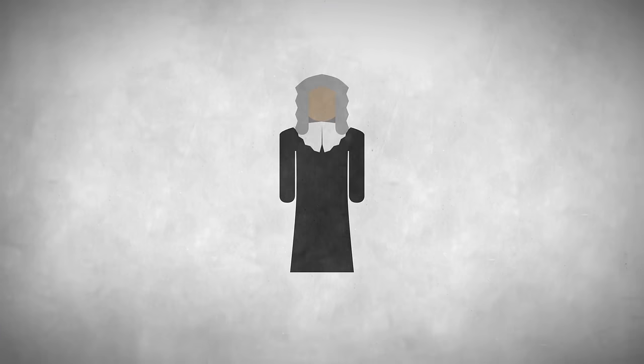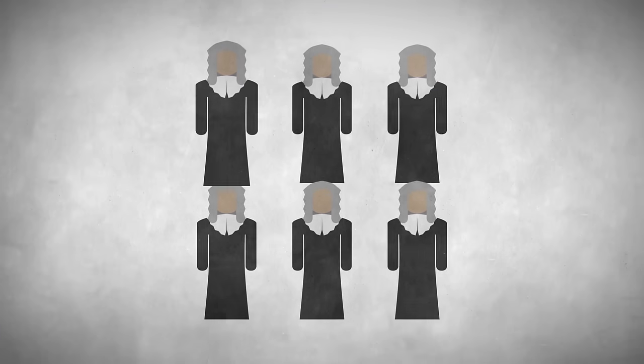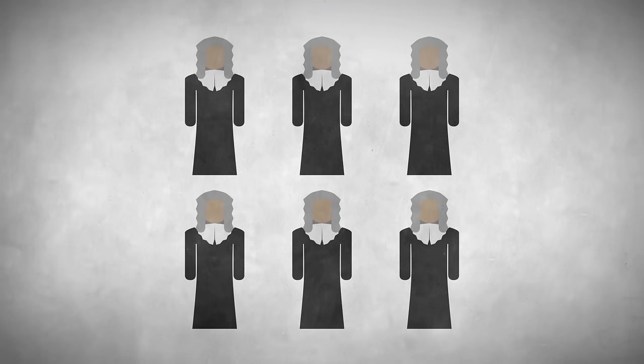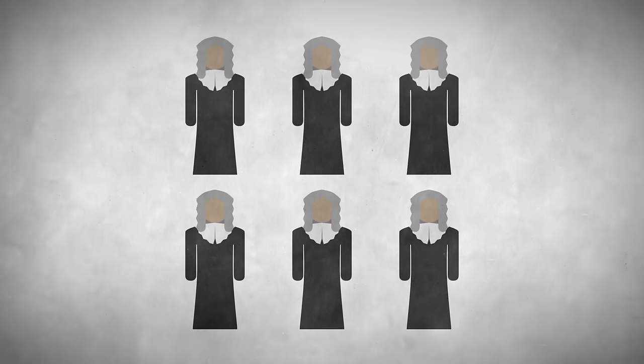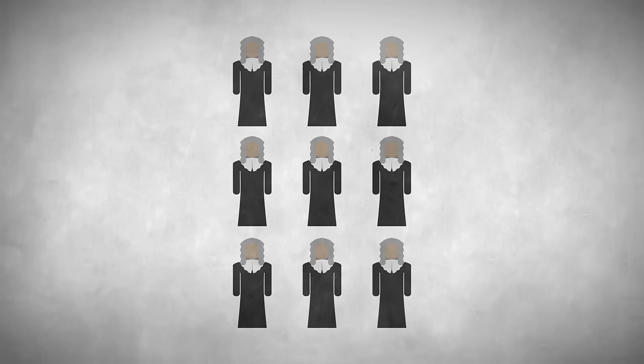The first version of the court had only six justices. In 1869, that number grew to nine and has remained that way ever since.